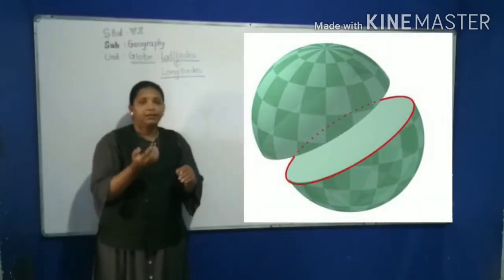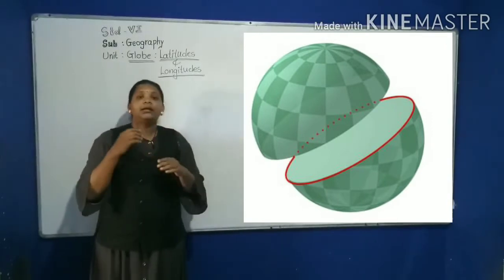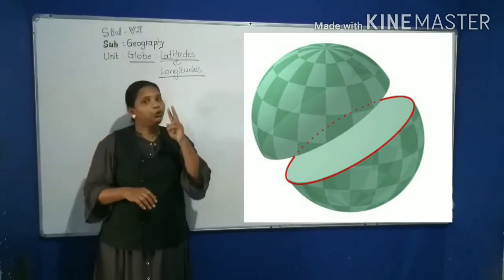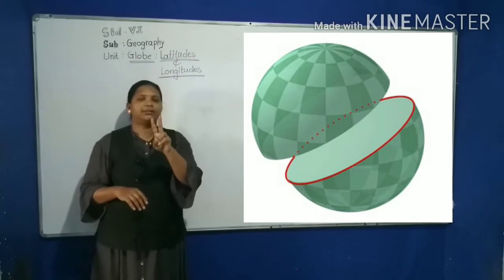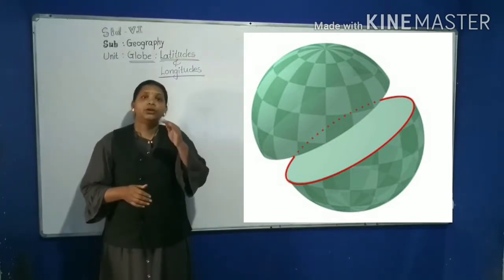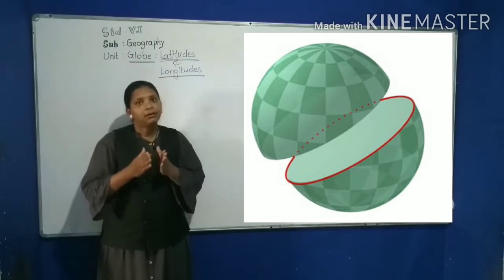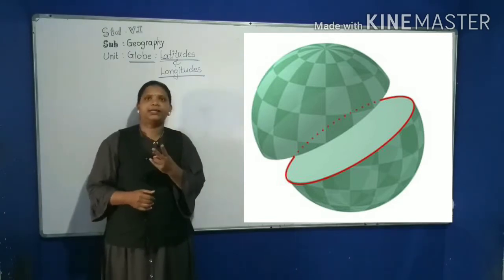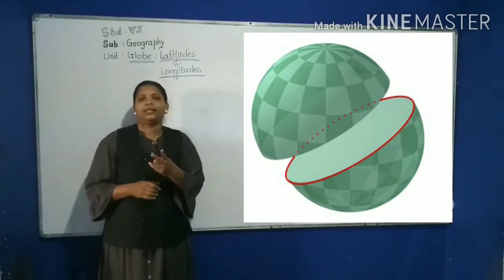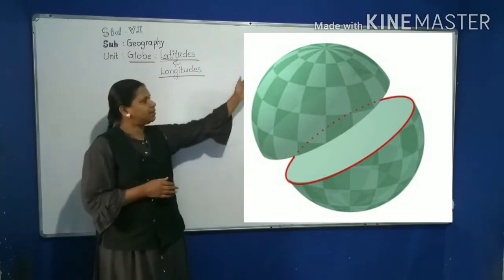The line of equator divides the earth into two equal parts. It divides the earth into two halves that are called hemispheres.